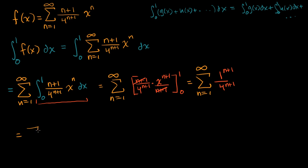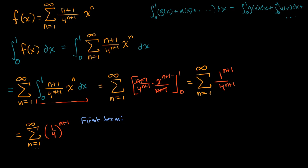This is starting to get nice and simple. This is equal to the sum from n equals one to infinity of (1/4) to the (n+1). You might immediately recognize this — it's an infinite geometric series. The first term, when n equals one, is (1/4) to the second power, which equals one over sixteen. So our first term is one-sixteenth.